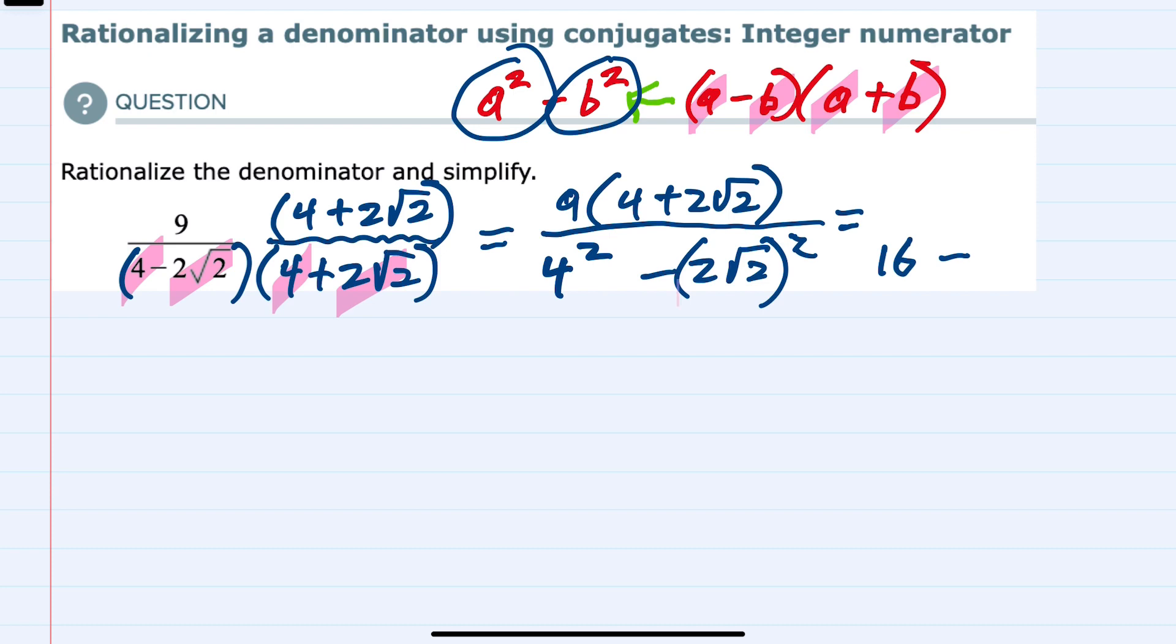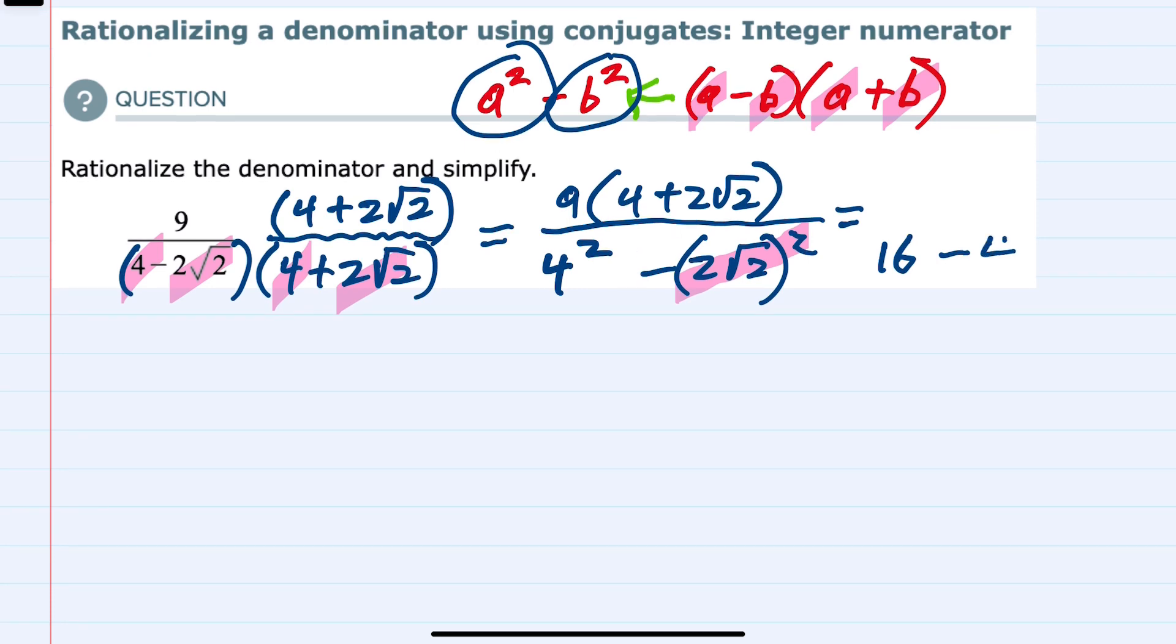And then for this second part, we have 2 square roots of 2 squared. So I have to square everything inside that parentheses. So first, squaring the 2 outside of the square root would give me 4. And then squaring the square root is actually going to cancel out. So the square root of 2 squared is going to give us just 2.